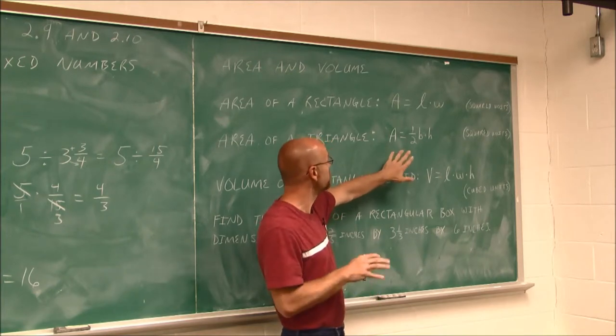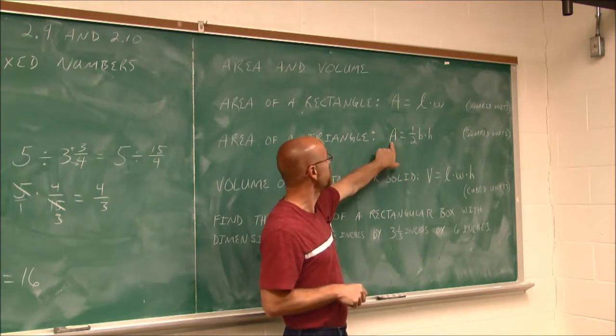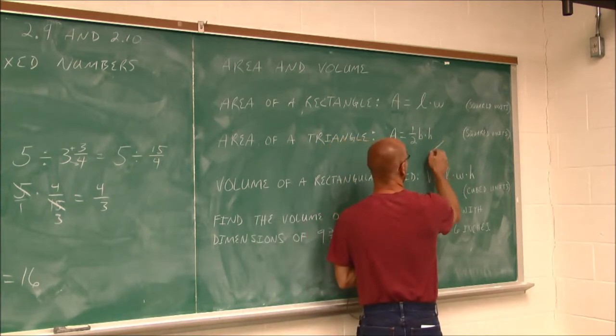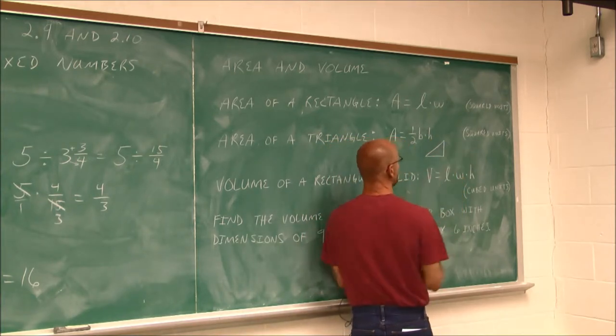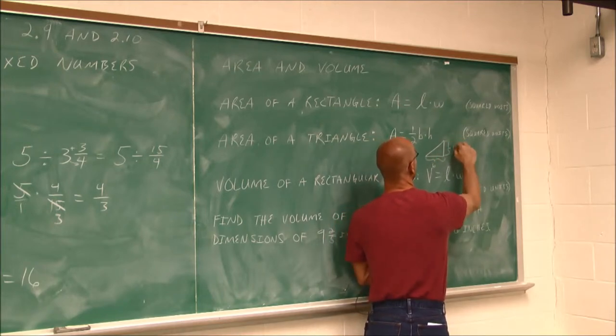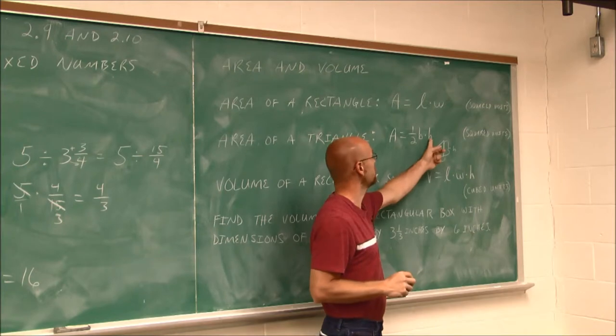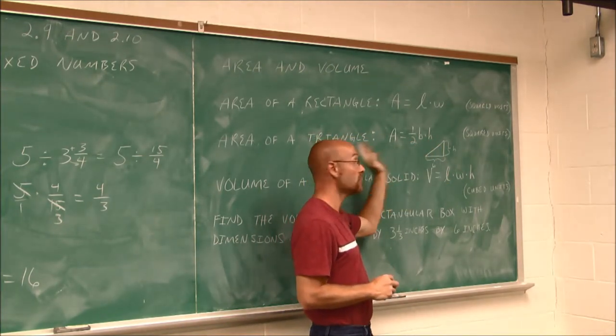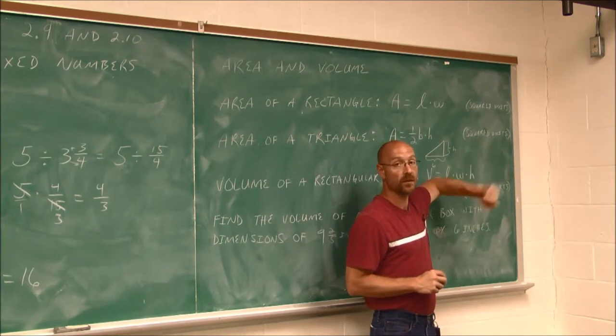Area of a triangle. We've seen this formula. Hopefully you've committed it to memory. Please do so if you're a little rusty with it. But we have the area equals 1/2 the base times the height. And just as a refresher, if we have a triangle, this is the base and this is the height. So we'd multiply the base times the height and then take half of it. Again, it's area, so we have to remember the units are squared.